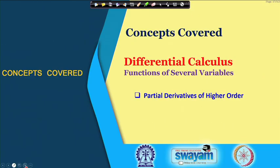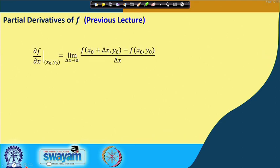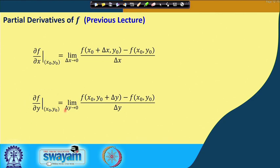Welcome to the lectures on Engineering Mathematics 1. This is lecture number 10 and we will be talking about partial derivatives of higher order. In the last lecture we covered the first order partial derivatives — the fundamental definition of the partial derivative with respect to x at a point, taking the limit of the increment in x, and similarly the first order partial derivative with respect to y when that limit exists.